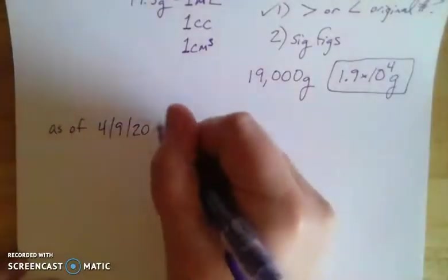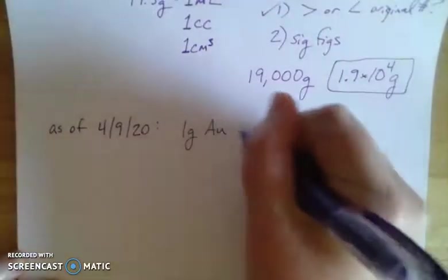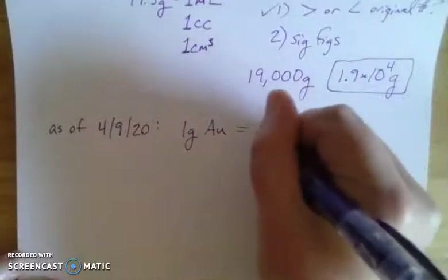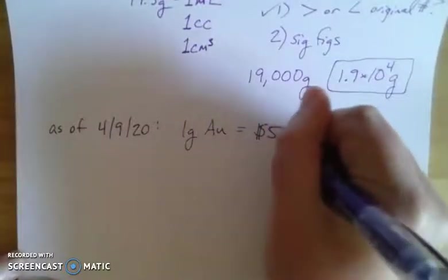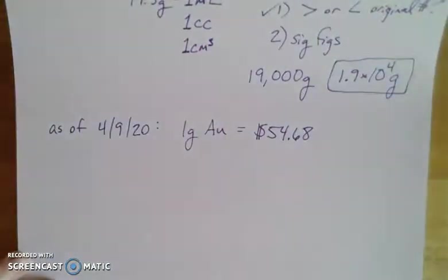2020. As of today, one gram of gold is $54.68, so that's the current worth of gold. Let's figure out how much that's worth. Again, dimensional analysis to the rescue when we